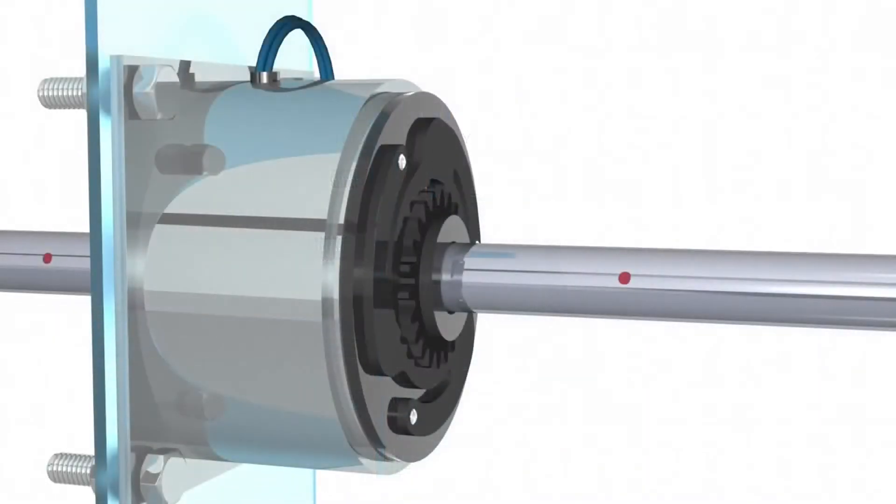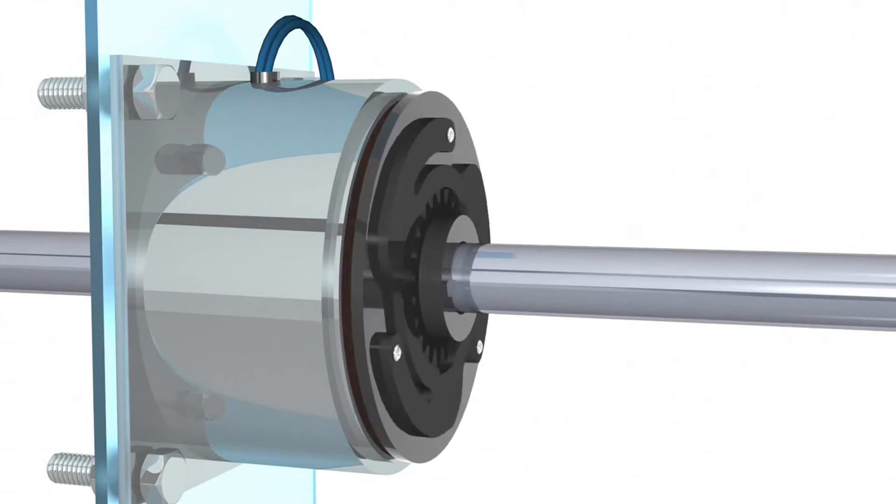The majority of electromagnetic brakes use a single plate friction surface to slow or stop motion. Although there are multiple disc designs, all function in a similar manner.